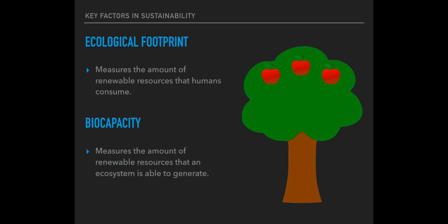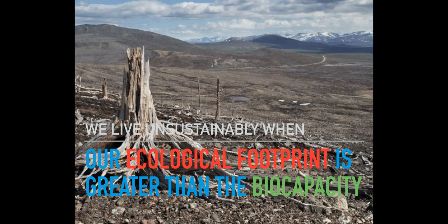Now let's say you share with another family and all the apples are consumed. This relationship is perfectly sustainable because the rate at which the apples are produced equals the rate at which you eat the apples. But now let's say your neighbors decided to share with their friends without asking you. This relationship is no longer sustainable because the tree can no longer produce enough apples to satisfy your consumption. The rule of thumb is that if the ecological footprint is greater than the biocapacity, you are not living sustainably.